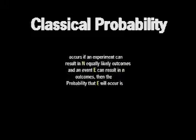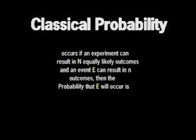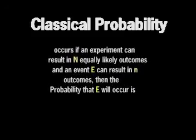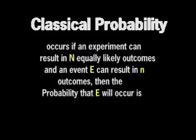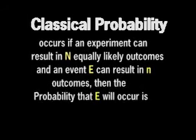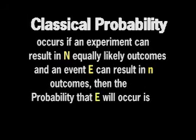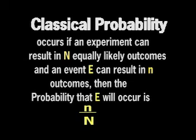Classical probability is defined as follows: if an experiment can result in N equally likely outcomes, and an event E can result in n outcomes, then the probability that E will occur is n over N.